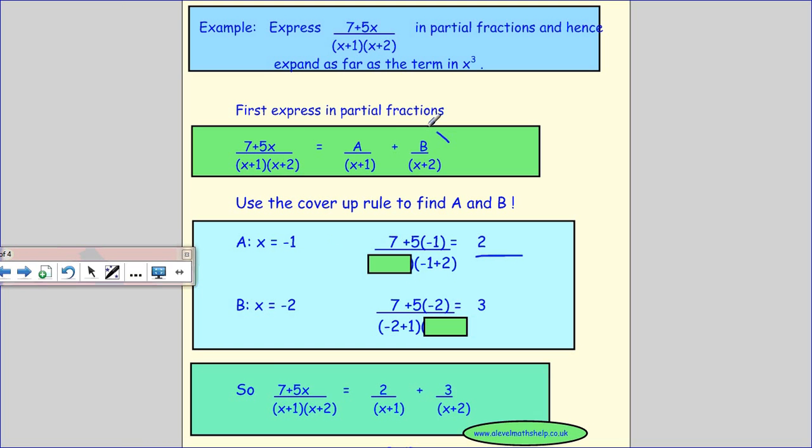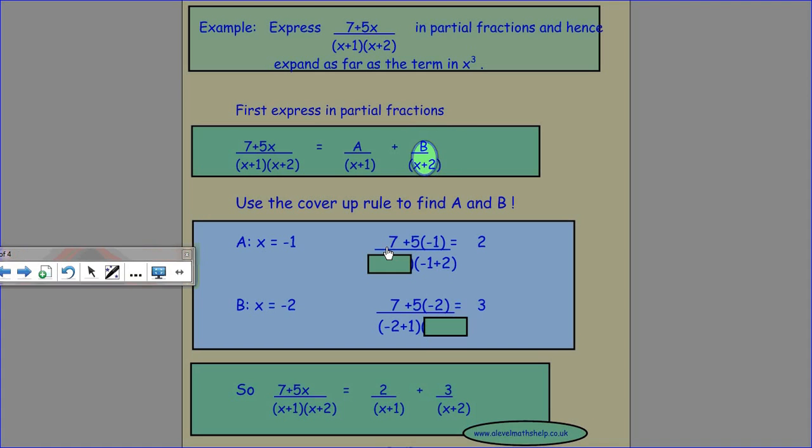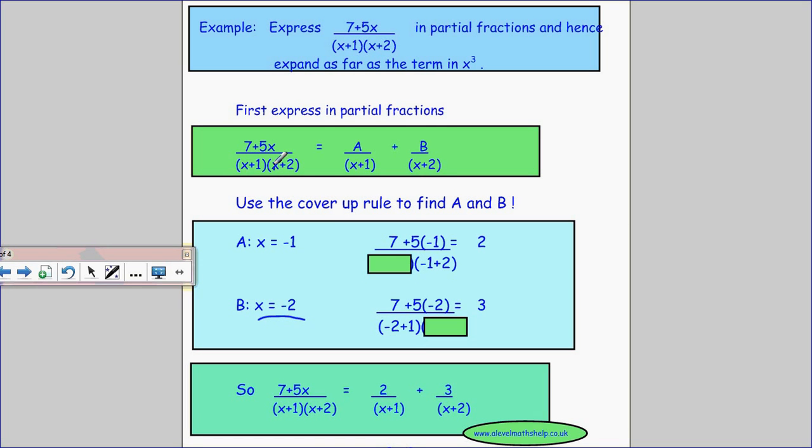We then want to find B and we say when will B, the denominator B equals zero, equals zero when x equals minus two. So then we want to cover up our x plus two and substitute x minus two equals minus two and the rest is seven plus five times minus two minus two plus one. So then we've got our expression put into its partial fractions.